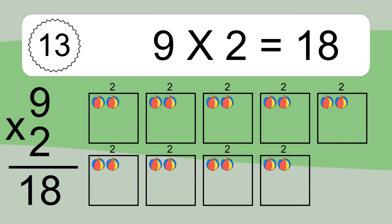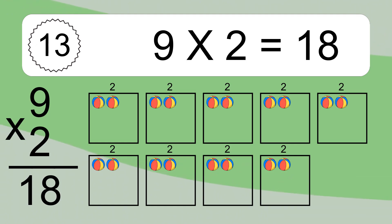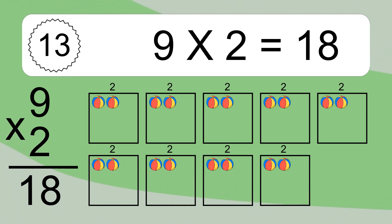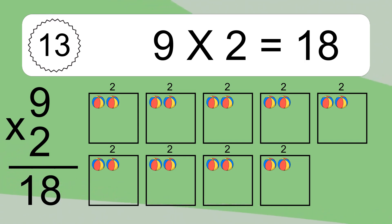We have 9 boxes, and each box has 2 colorful balls inside. If you count all the balls in all the boxes together, you will have 9 times 2 balls. This equals 18 balls.